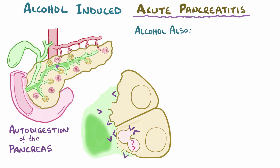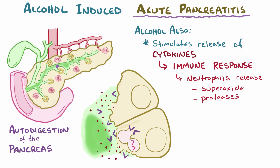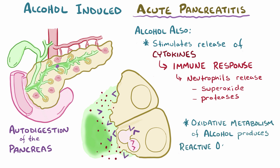Alcohol also contributes to pancreatitis in other ways. For example, it stimulates acinar cells to release inflammatory cytokines, which attracts a strong immune reaction. Neutrophils arrive quickly and often release superoxide and other proteases, contributing to the problem. Finally, it's thought that high consumption and subsequent oxidative metabolism of alcohol might produce enough reactive oxygen species to overwhelm cellular defenses and damage the cells.